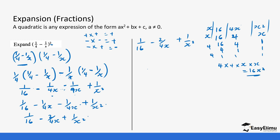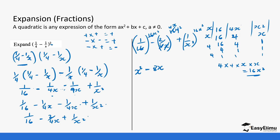So 16x² is what we multiply everywhere. Multiplying 1/16 by 16x²: the 16 cancels and you're left with x². Then minus: the x cancels with one of the x's and the 4 cancels with 16 to leave 4x, so 4x times 2 gives 8x. Then plus: x² cancels completely and you're left with 16. So our expression in non-fraction form is x² minus 8x plus 16. Remember, if you've been taught to remove the fraction, this form makes your work easier.